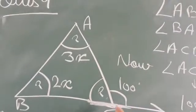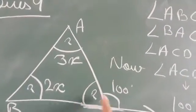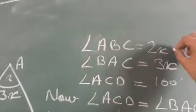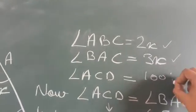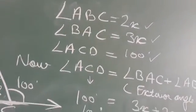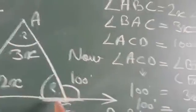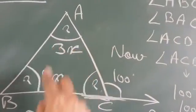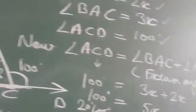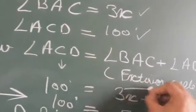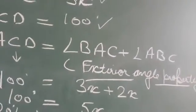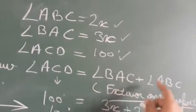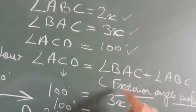अब हमको exterior angle की property पता थी कि जो बाहर वाला angle है वो अंदर वाले दोनों angle के equal है। 2x given है, 3x given है, 100 given है। ACD जो बाहर वाला angle है - हमको पता है बाहर वाला angle अंदर वाले दोनों angles के sum के equal है due to exterior angle property। ACD = BAC + ABC।